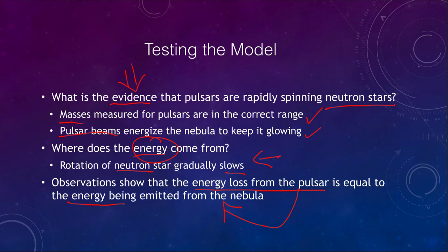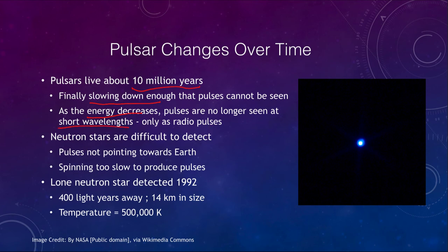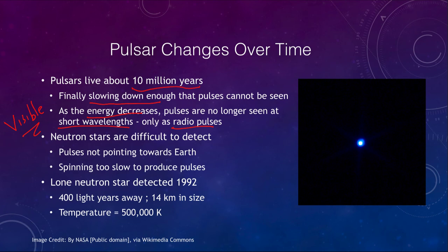How do pulsars change over time? Pulsars can live for about 10 million years, and eventually they slow down enough that the pulses can no longer be seen. As the energy decreases, the pulses can no longer be seen at short wavelengths. For a young pulsar like the Crab, we can see it pulse on and off in visible light. For older pulsars that have slowed down, we can no longer see them in visible light but can still detect them as radio pulses. Eventually the pulsars will slow down and not be detectable at all.